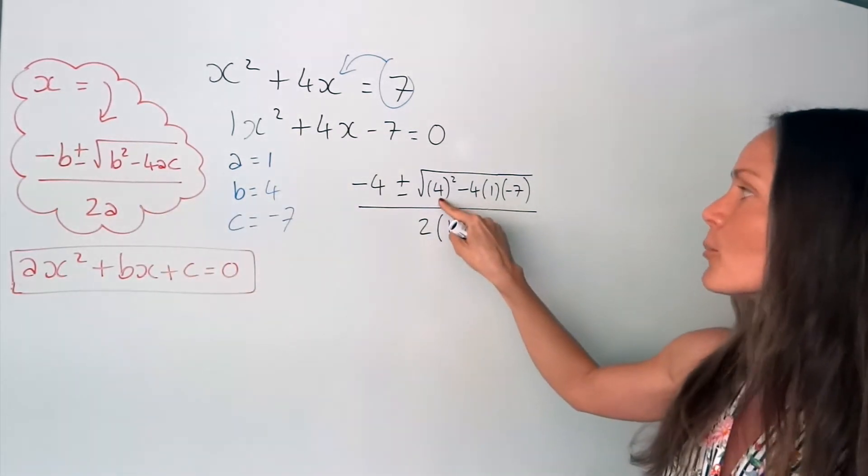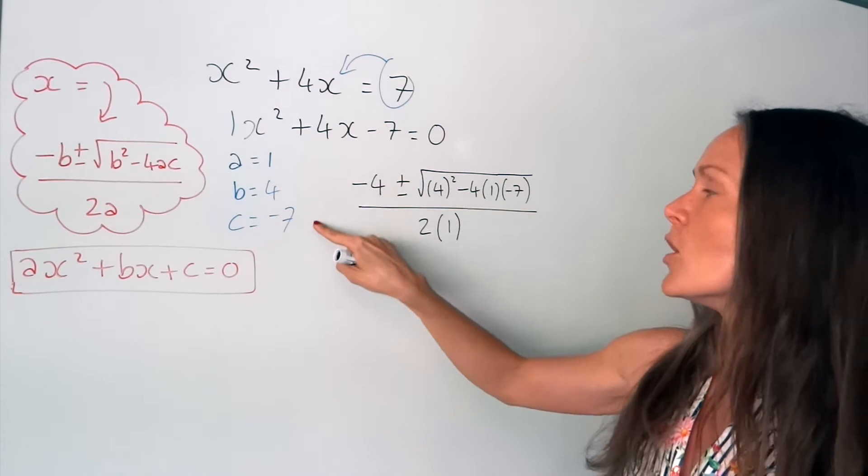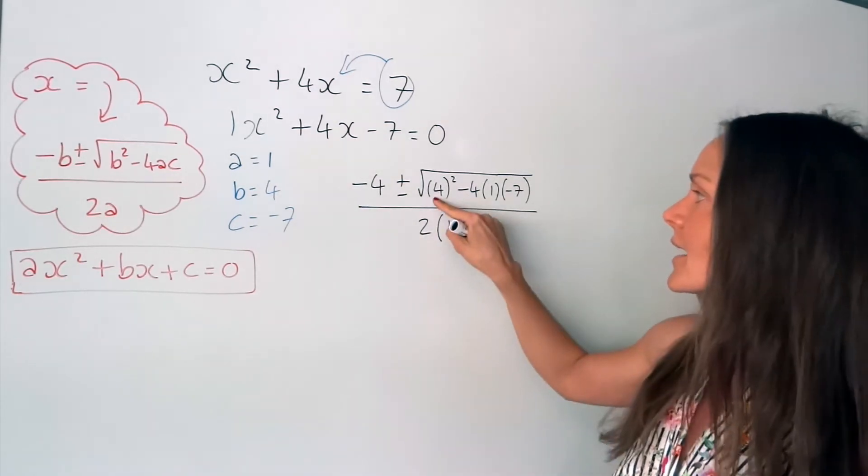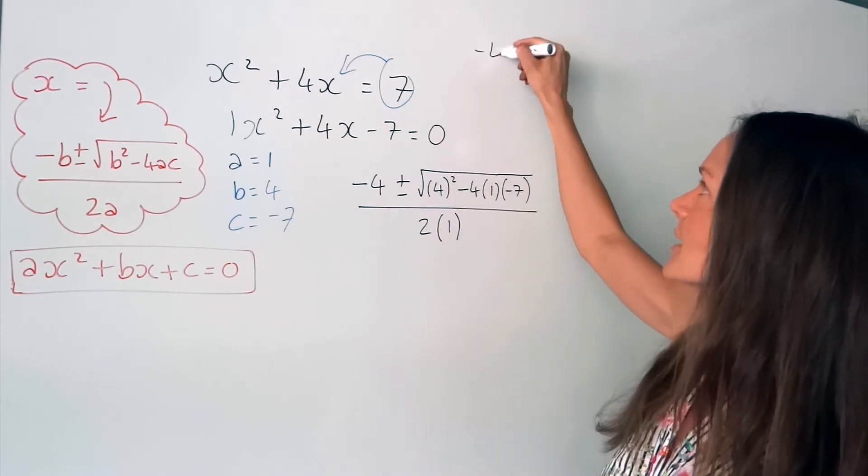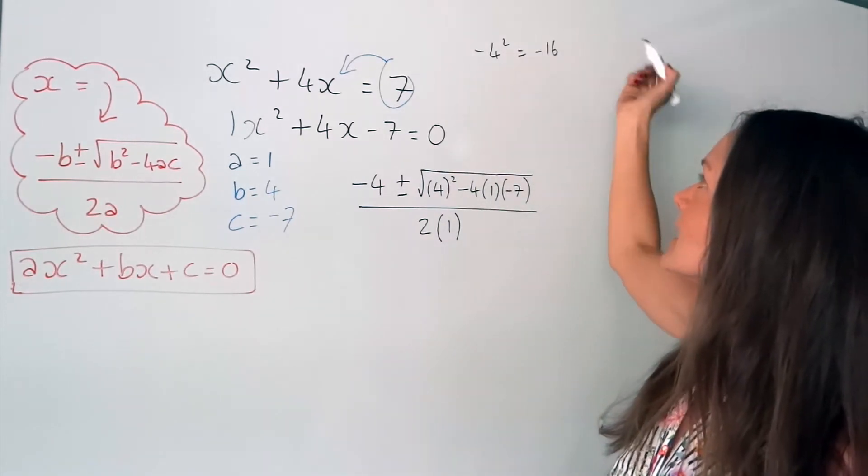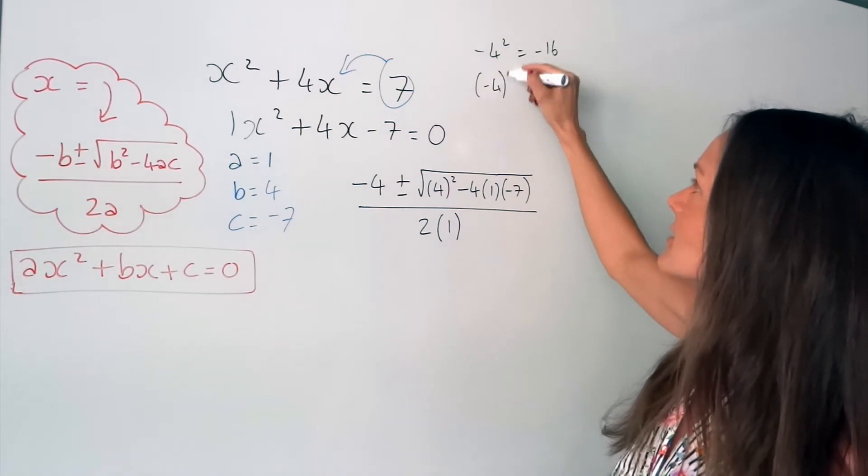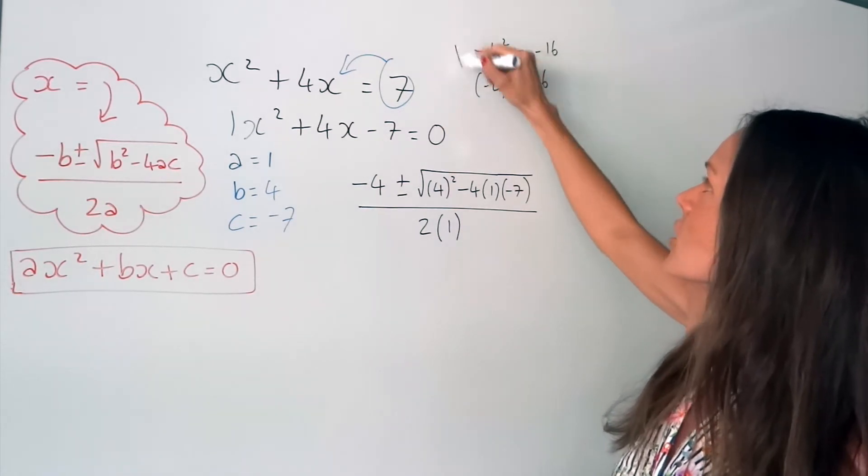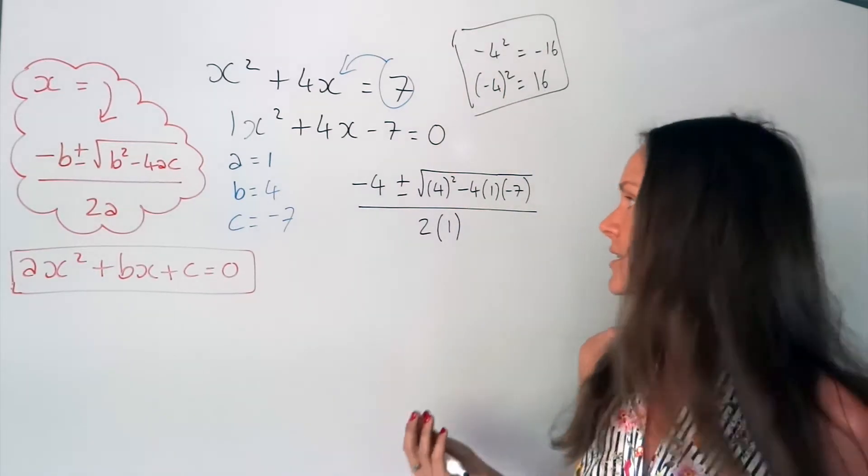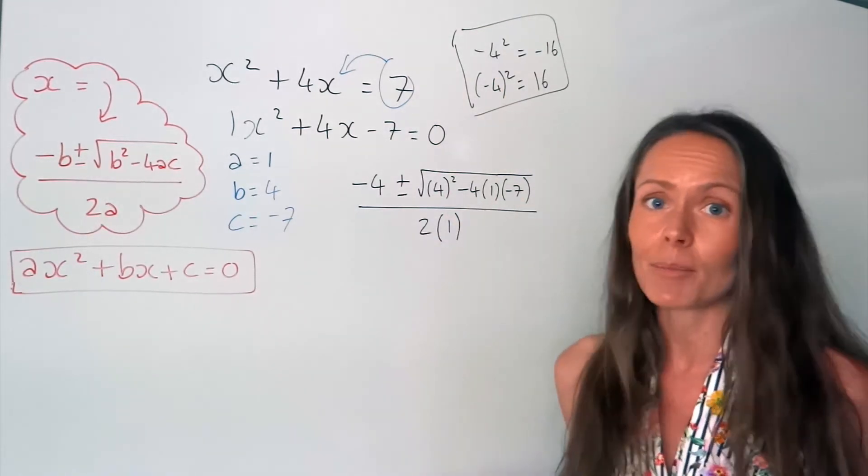Now, I would always put brackets around these numbers because some people don't put brackets. And if this was a negative value, if you did negative 4 squared like this without brackets, it gives you minus 16. But if you do it with brackets, it gives you positive 16. So it's always a good idea to put your numbers into brackets like I've done here. It's just a good habit to get into.